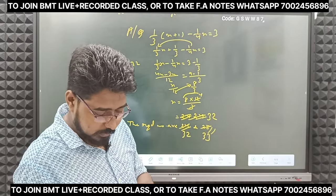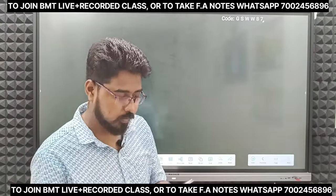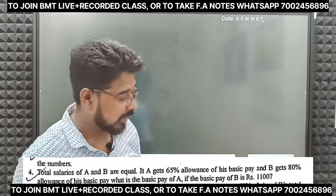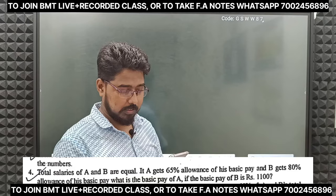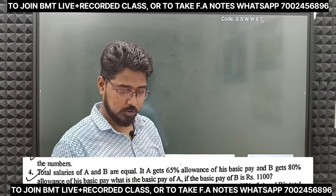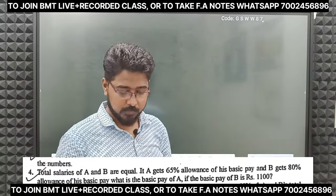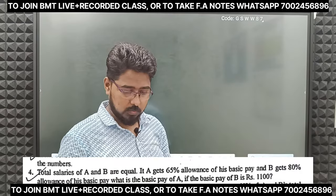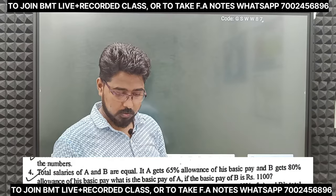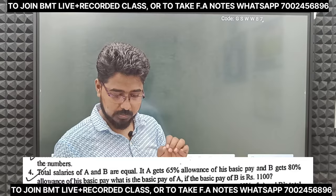Let's do one more sum — the last one for today. The total salary of A and B are equal. If A gets 65 percent allowance on his basic pay and B gets 80 percent allowance on his basic pay, what will be the basic pay of A if the basic pay of B is 1100?